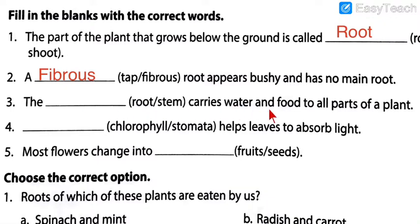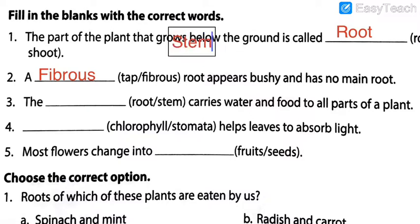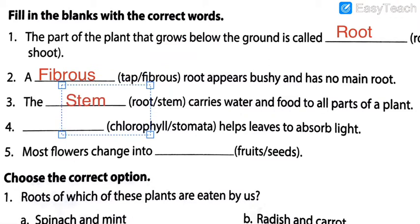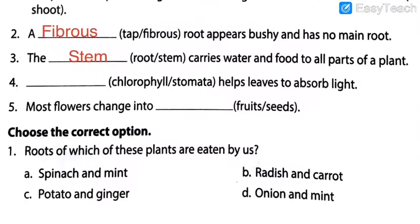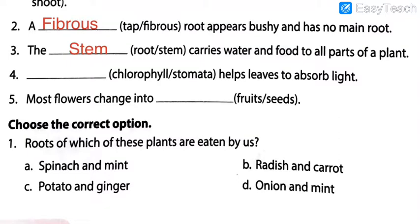Next: The dash carries water and food to all the parts of the plant. Does root carry the water and food, or does stem carry the water and food? Obviously stem, because root absorbs the water from the soil and passes it towards the stem, and then stem carries the food and water and passes it to all the parts of the plant. I hope the students who are having the textbook are filling these blanks with me.